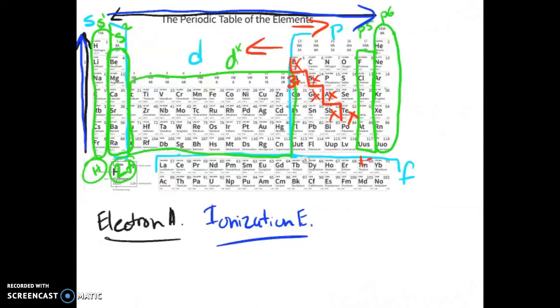And the last trend we need to talk about is atomic radii. Atomic radii is just the distance from mid-nucleus to the edge of the electron cloud. And it follows the trend of electron affinity as it goes down the further left you go. But it also goes down when you go down a group.